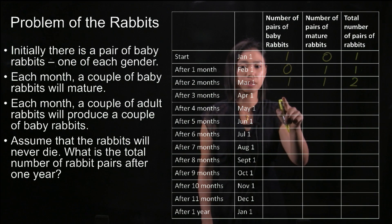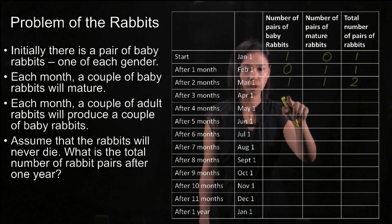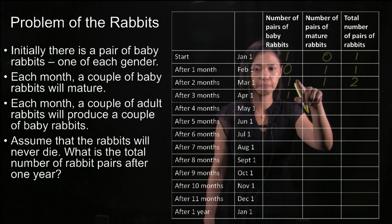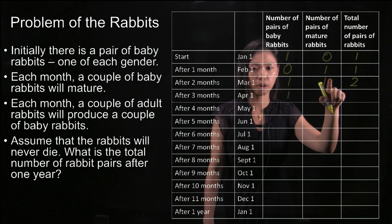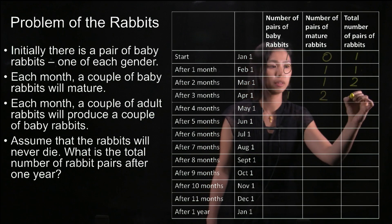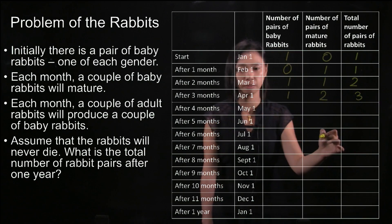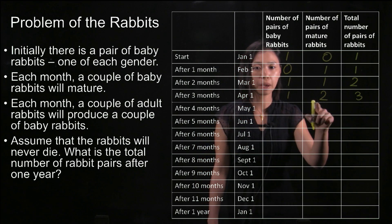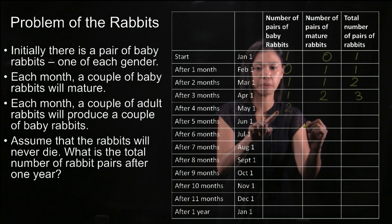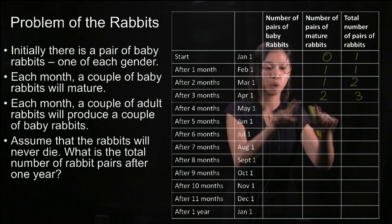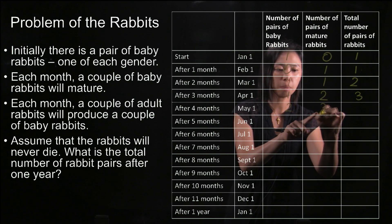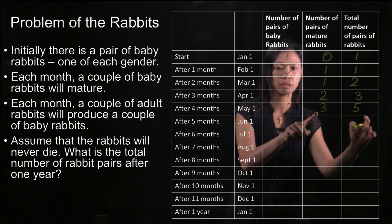After three months, the mature pair gives birth to baby rabbits again — one pair. The previous baby rabbits mature, and the mature rabbits survive, giving us two pairs of mature rabbits. We have three pairs in total. After the fourth month, the two pairs of mature rabbits give birth to two pairs of baby rabbits. One baby pair matures, and the two mature pairs survive, giving three pairs of mature rabbits and five pairs in total.